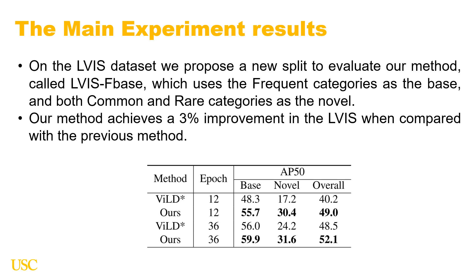On LVIS, in the original setting, only the rare categories are used as novel categories, which comprise less than 0.5% of all validation annotations. This is too sparse to accurately represent the performance of the detector. Therefore, we propose a new evaluation setting called LVIS-F-BASE, which uses frequent categories as base categories and both rare and common categories as novel, which is more representative. Our method shows significant improvement on LVIS when compared with previous methods.